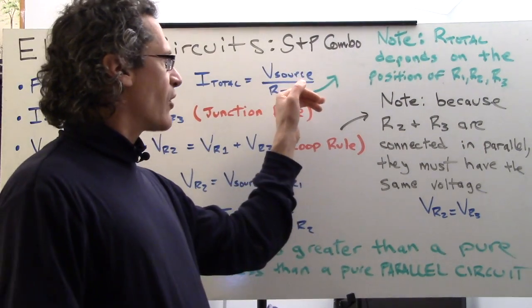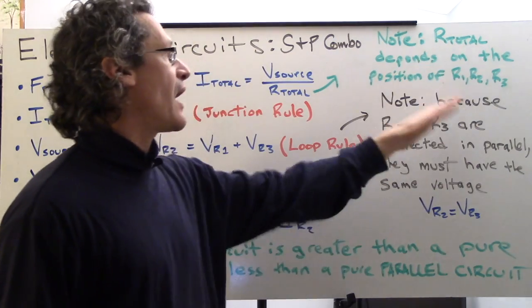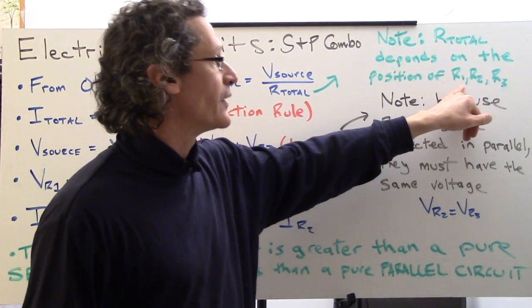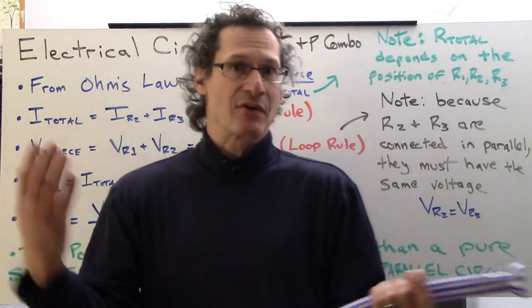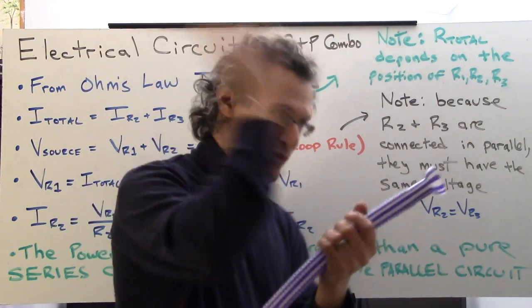One thing that we've got to note though is that R total really depends on the position of R1, R2, and R3. In other words, if you rotate them like volleyball, you have different servers. So let's say the series resistor is the server in volleyball, right? You're going to rotate after certain points.